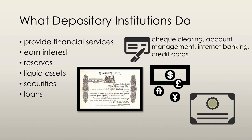Securities include government and other bonds, and they can be converted into reserves, but prices do fluctuate. These assets are riskier than liquid assets, but they have a higher rate of interest. Loans are commitments of funds for an agreed-upon period of time, used to finance the purchase of capital, homes, or durable goods. Even credit cards are an example of loans. These are the riskiest type of assets for banks, as they cannot be converted into reserves until they are due to be repaid, and thus banks can charge the highest rate of interest for this type of investment.